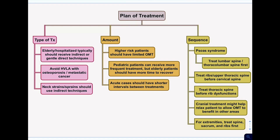This part on sequencing is not very high yield, but general high-yield principles include: for higher-risk patients, avoid direct treatments and do something indirect, give them more time to recover. If someone has osteoporosis, don't do HVLA because you might cause a fracture. Many of these are common sense, but some require more thinking — like treating ribs or upper thoracic spine before cervical, or thoracic spine before ribs, or axial skeleton before extremities.